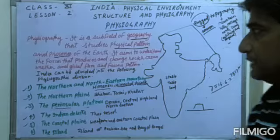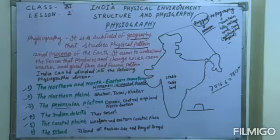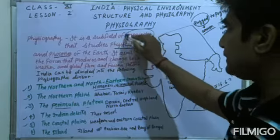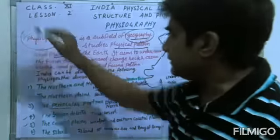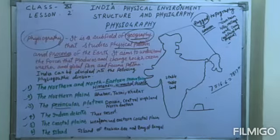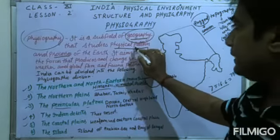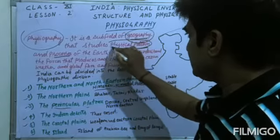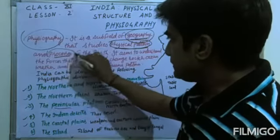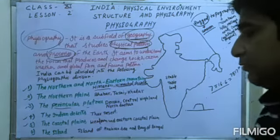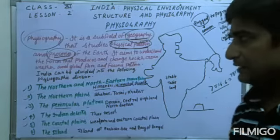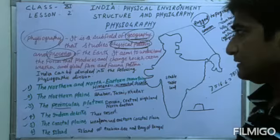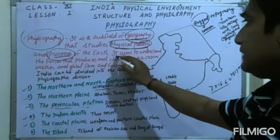Physiography is a sub-field of geography — geography is the main subject and physiography is the sub-field. It studies the physical patterns and processes of the Earth. Two topics are studied here: one is physical patterns, meaning what type of physical patterns exist, and the other is the processes — what processes are seen here.